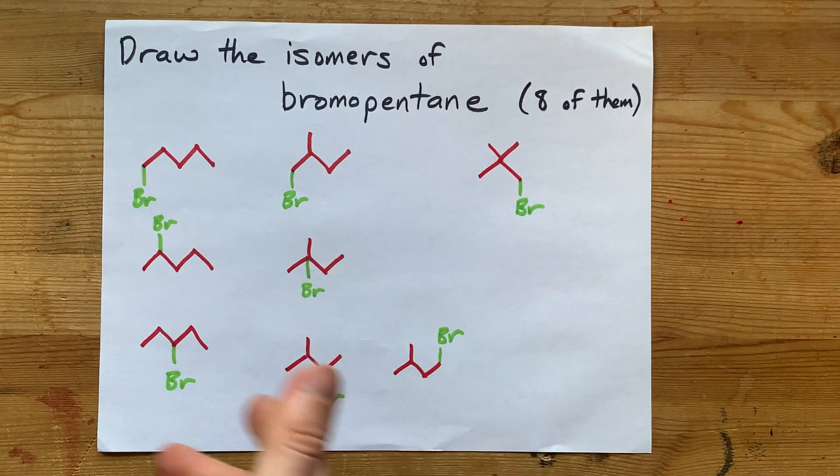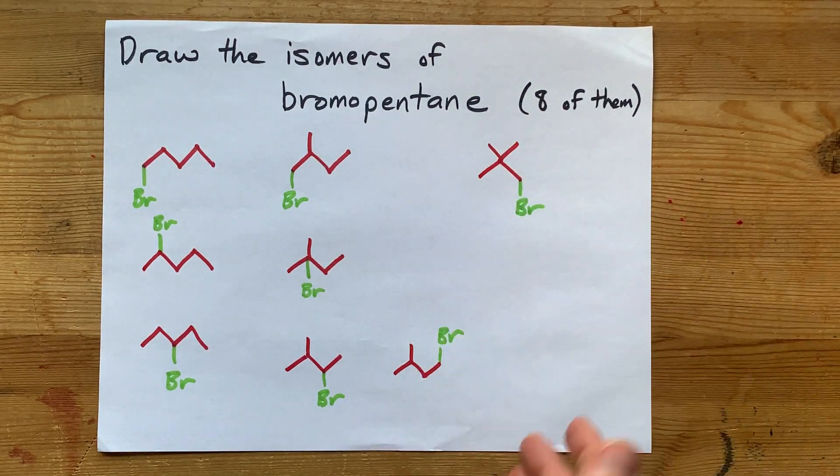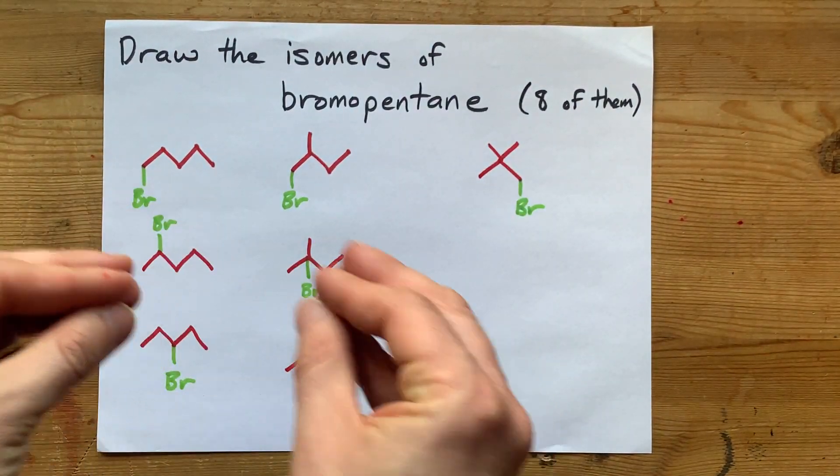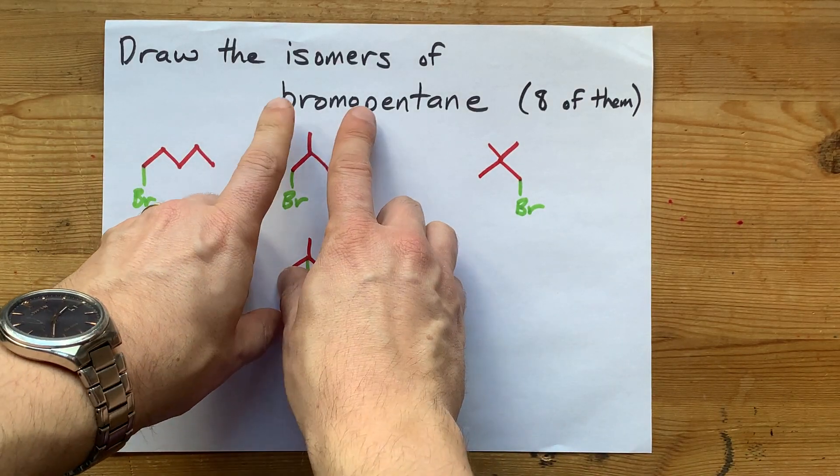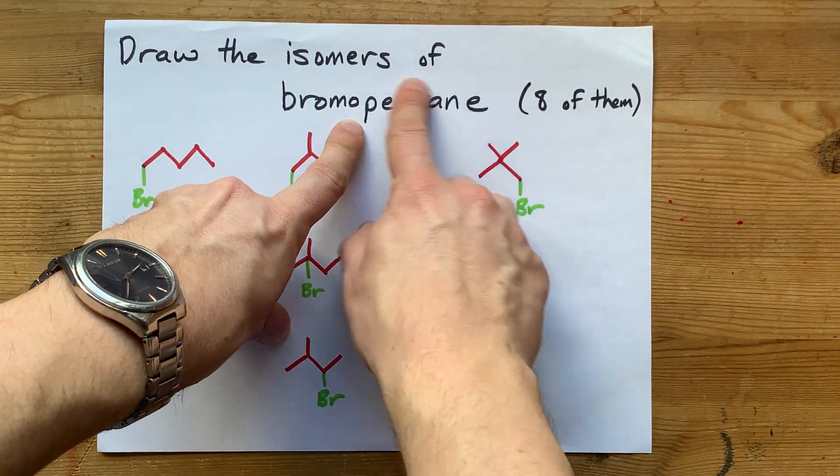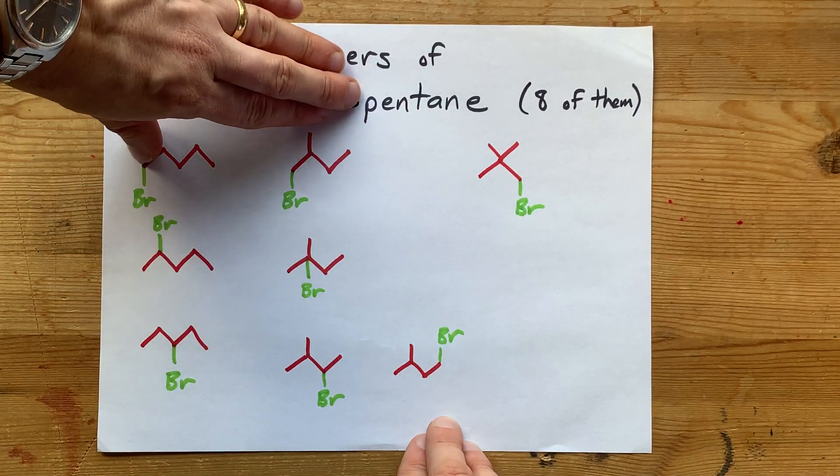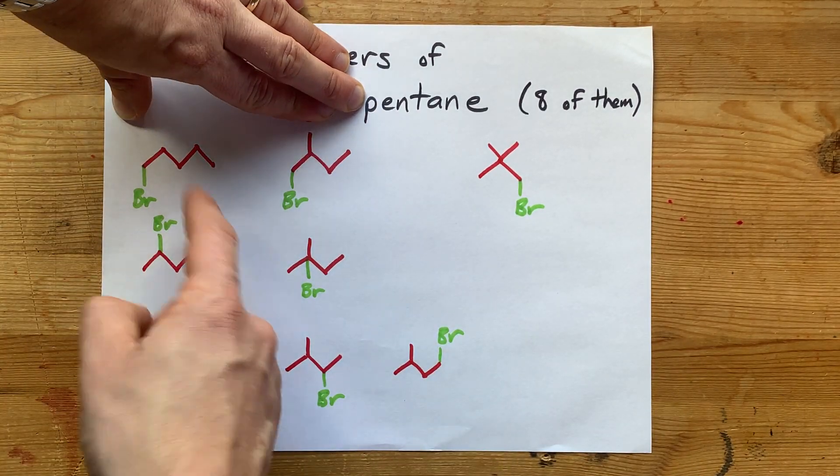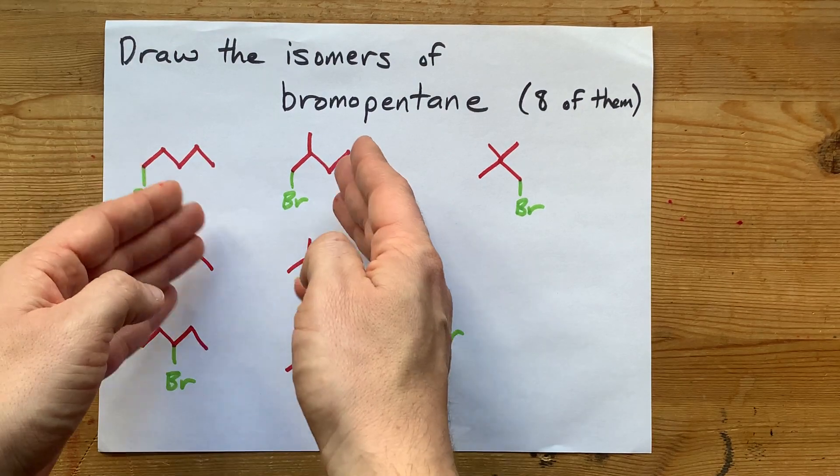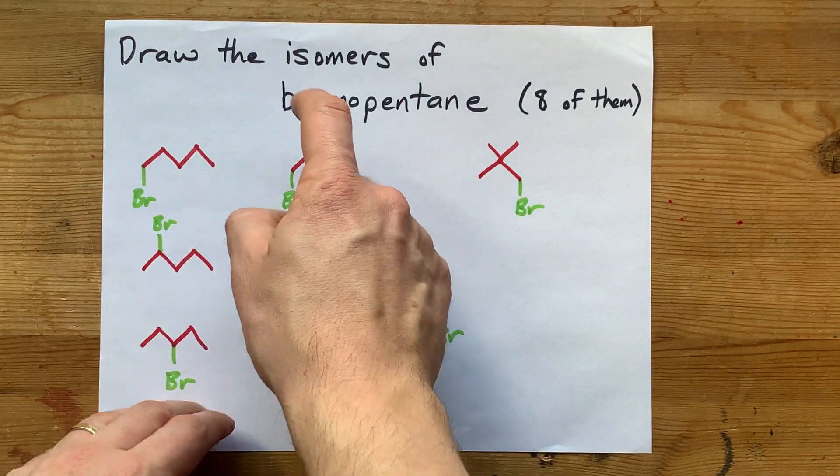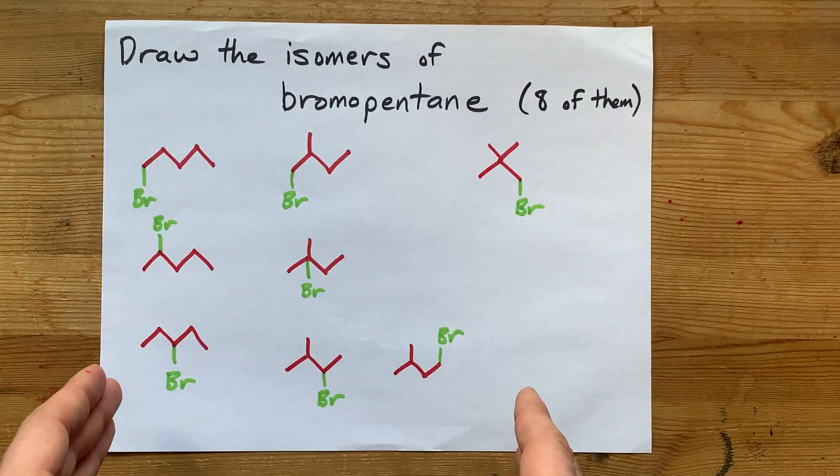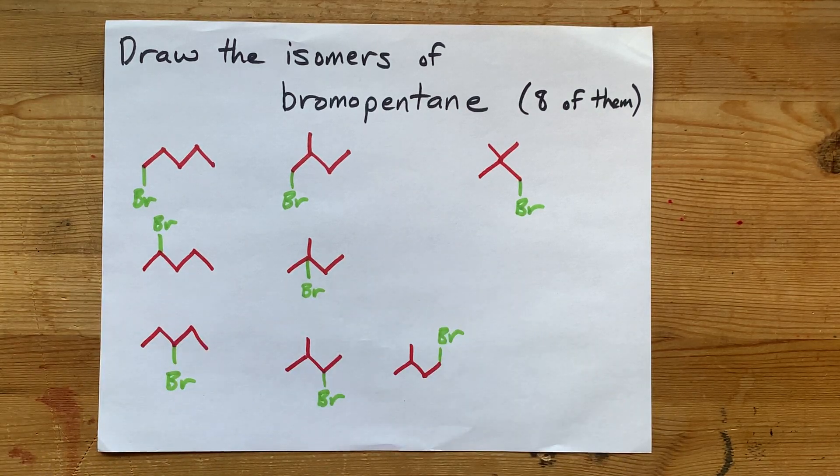And actually, this is eight, which is what I promised you there would be. So again, if you're asked to draw the isomers of a carbon chain that has a substituent, I want you to first figure out all the isomers of just the carbon chain. Then you can reproduce them ad nauseum and put the substituents in various places until you've exhausted all your possibilities.